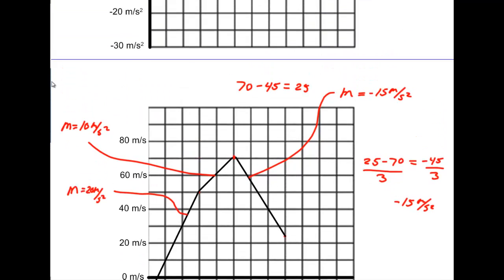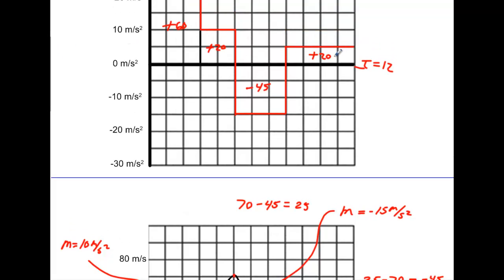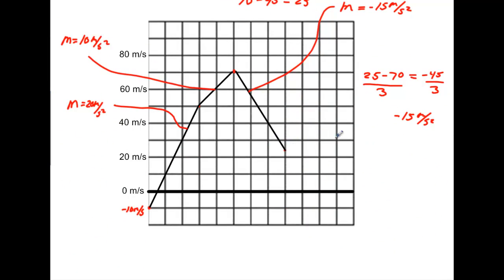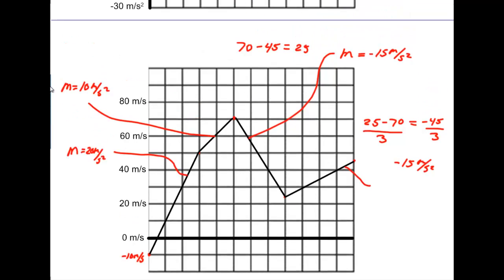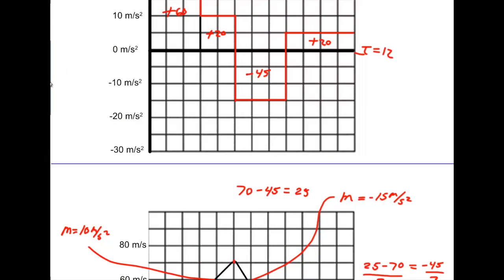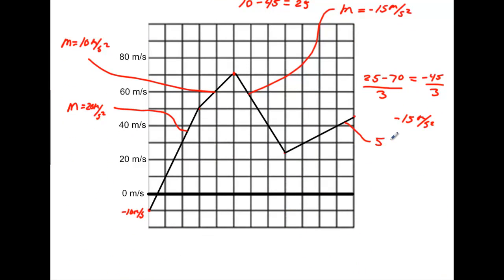Now for the next four seconds, I've added 20 more. I have 25, I need to go up to 45. I draw my line from 25 up to 45 over four seconds. The slope should be the acceleration of 5 m/s². We verify: 45 minus 25 is 20, divided by 4, gives 5 m/s². So we know our graph is correct. That's what your velocity versus time graph looks like.